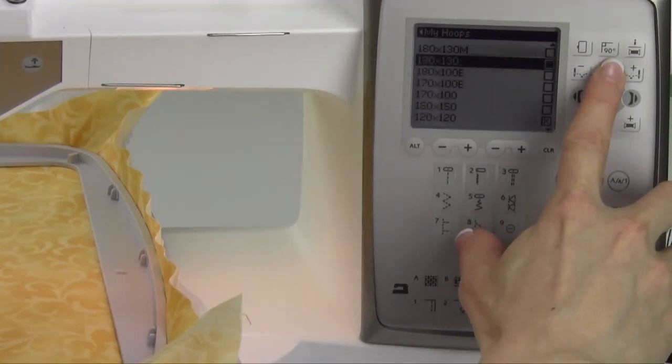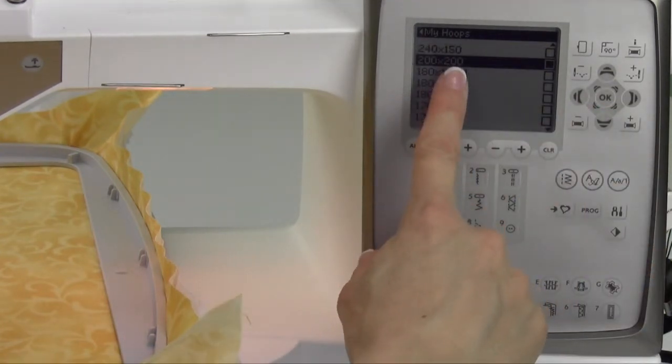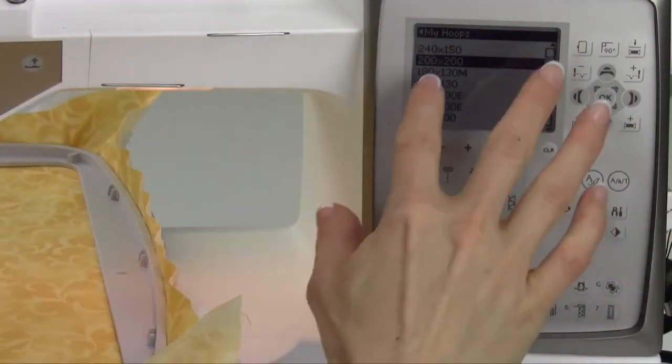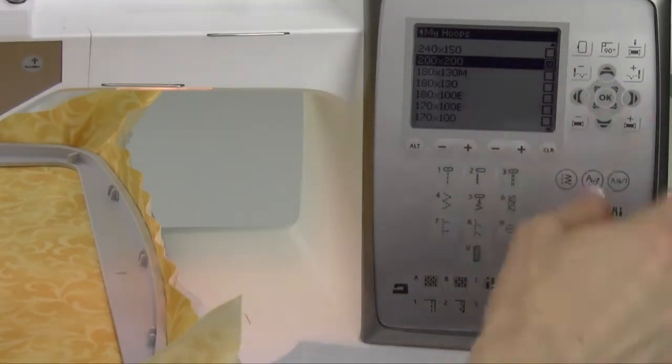Another one we have a lot of people purchasing is the 200 by 200. That's 8 by 8, and then that's great for a lot of quilt blocks. Go ahead and touch OK to put a little check mark in there.